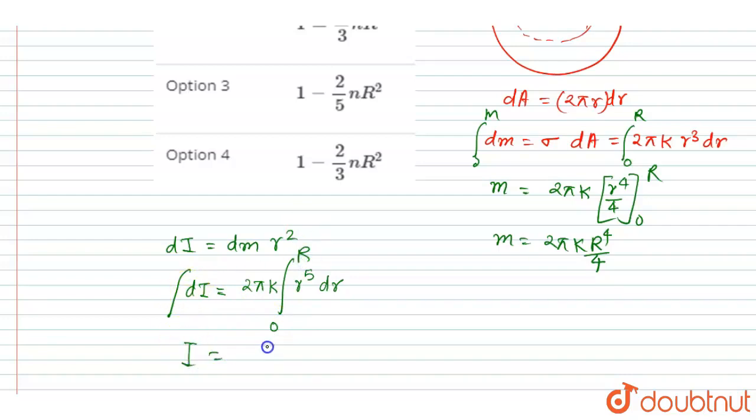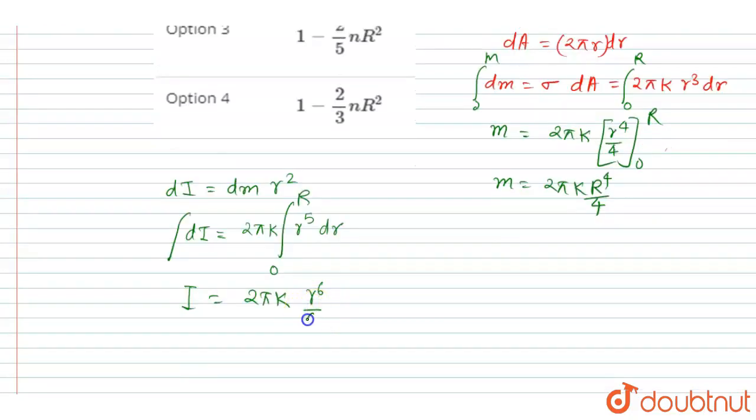So after integrating, you will get 2πk is the constant, so you will get r to the power 5 is there, so r to the power 6 by 6, limit will be from 0 to capital R.